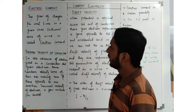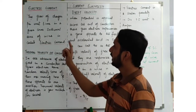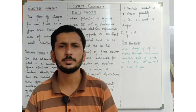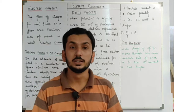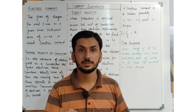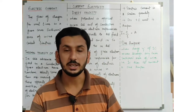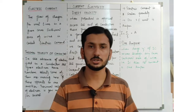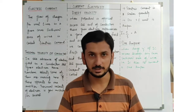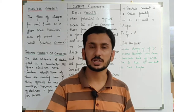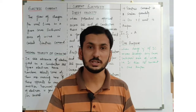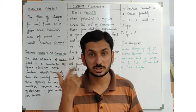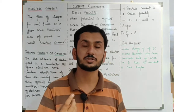First of all, our topic is electric current. Electric current is basically the flow of charges in unit time through any cross-sectional area. The number of free electrons that pass through any cross-sectional area in one second — that is what we call electric current.